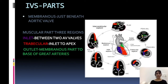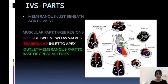We first read about the parts of the interventricular septum. The interventricular septum has mainly two parts: the membranous and the muscular. The membranous part is just beneath the aortic valve — this is the membranous septum, right where the aorta begins. The muscular part is divided further into three regions: inlet, trabecular, and outlet. The trabecular is the biggest one.